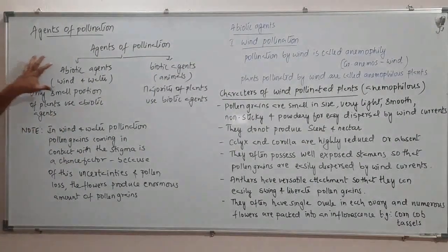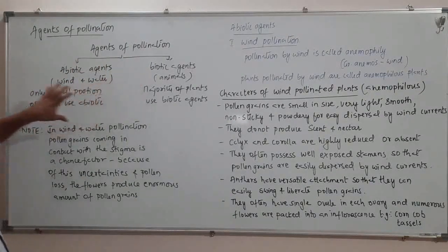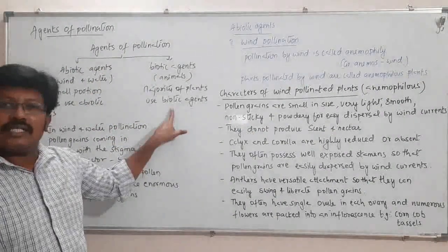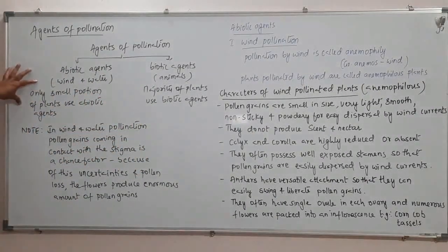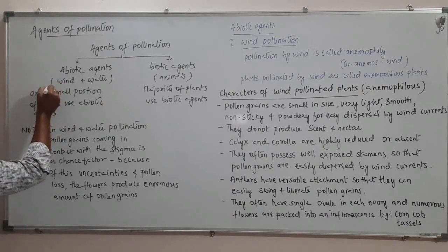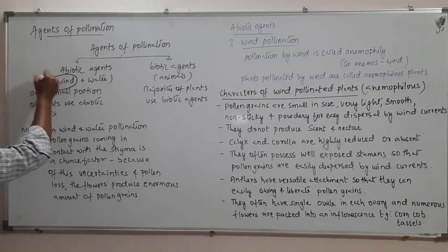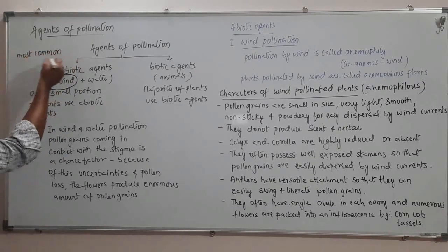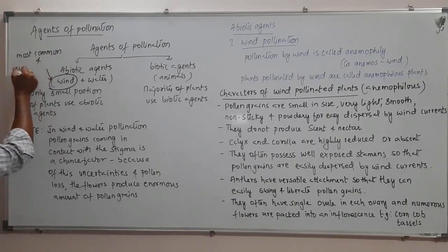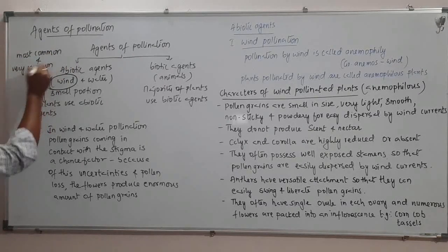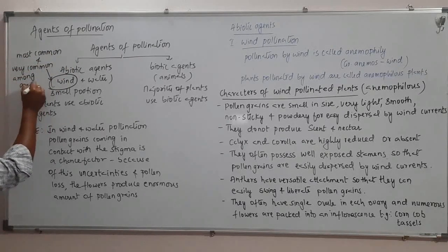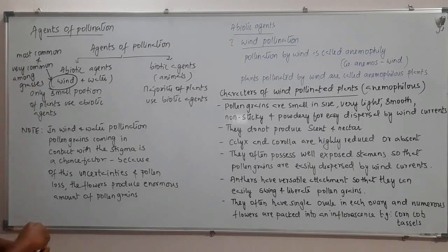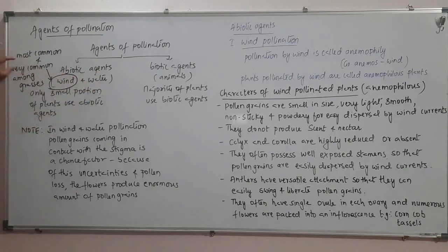In the case of biotic agents, animals carry pollen from one plant or flower to another. Out of these two types, the majority of plants use biotic agents, whereas only a small portion use abiotic agents. Among the abiotic agents, wind pollination is the most common, especially among grasses.